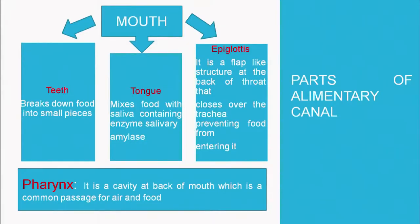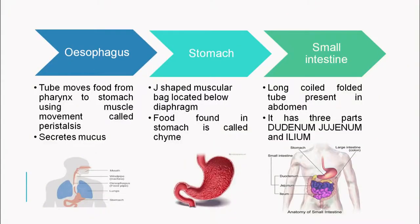The epiglottis is a flap-like structure at the back of the throat that closes over the trachea so food does not enter the windpipe. Then comes the pharynx — a common passage for both air and food. After the pharynx is the esophagus, which moves food from the pharynx to the stomach using muscle movements called peristalsis and secretes mucus, which protects the inner lining of the esophagus, stomach and small intestine.